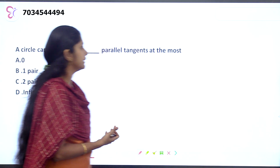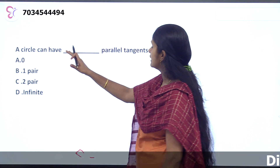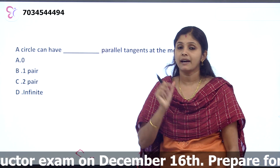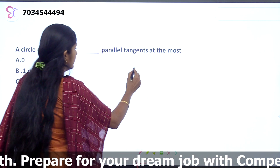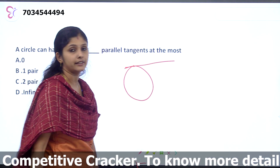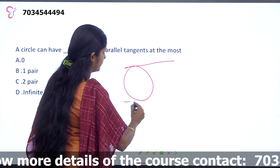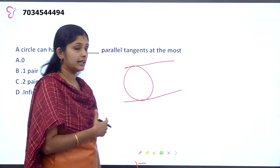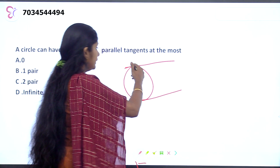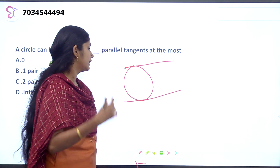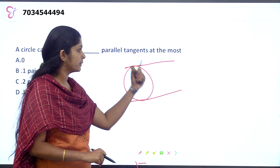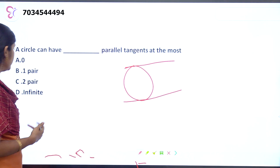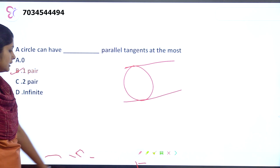A circle can have at most how many parallel tangents? A circle has tangents. We can draw parallel tangents to a circle. There can be at most 2 parallel tangents to a circle at any one time. The answer is 2.